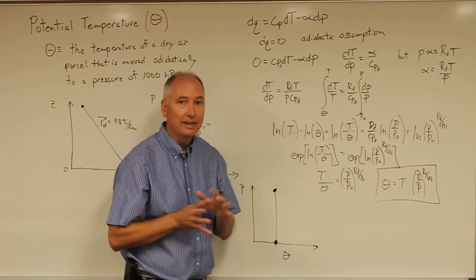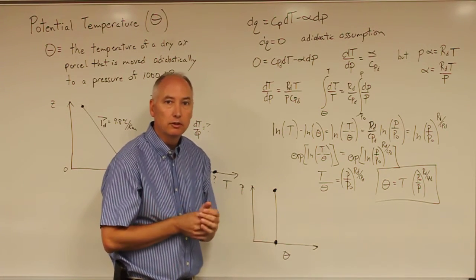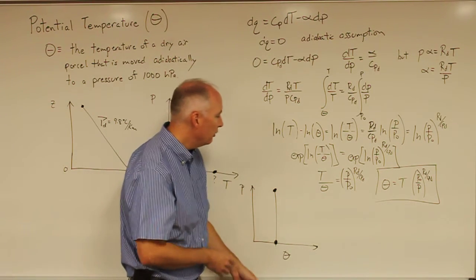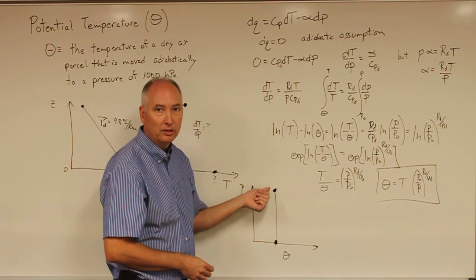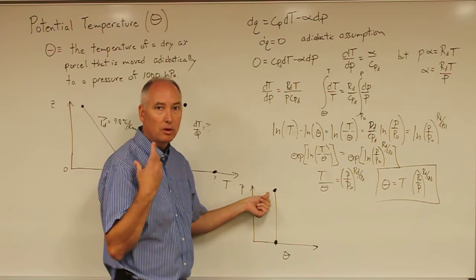The nice thing about potential temperature is that it's conserved for dry adiabatic motions. You can calculate the potential temperature of an air parcel at altitude and then if you move that air parcel dry adiabatically,